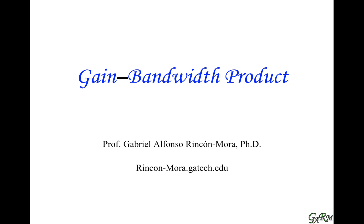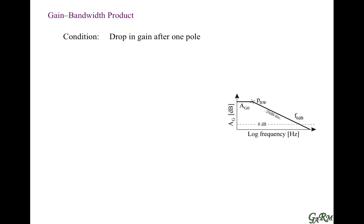This video is on Gain Bandwidth Product. The condition we want to describe is the dropping gain after one pole. Looking at this Bode plot, the x-axis is log frequency and the y-axis is gain in dB. At frequencies below a pole, the gain doesn't change, but at frequencies above that pole, the gain drops at negative 20 dB per decade.